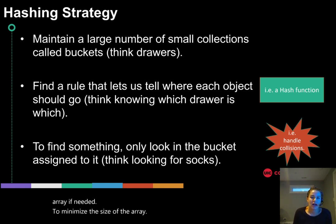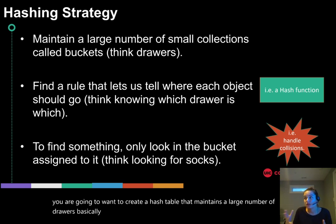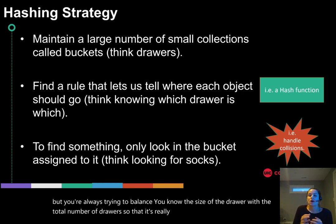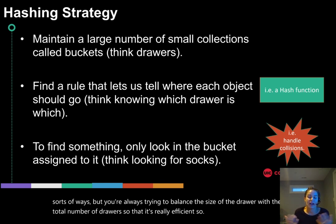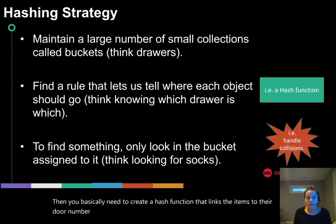So overall, as we're talking about hash functions, this is like the general strategy. You are going to want to create a hash table that maintains a large number of drawers, basically. And you can kind of think of this in all different sorts of ways. But you're always trying to balance the size of the drawer with the total number of drawers so that it's really efficient. So then you basically need to create a hash function that links the items to their drawer number. And that would be exactly what the hash function does. It takes the key and it gives you the location.